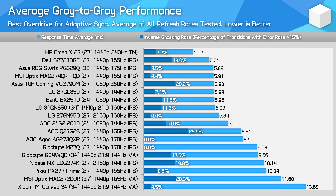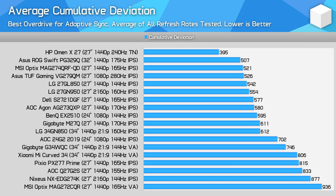The second chart is average grey-to-grey performance — a look at response times and overshoot on average across the refresh range, tested with the best single overdrive mode for variable refresh rate gaming. This is a key metric for those playing on a PC with either FreeSync or G-Sync enabled as the refresh rate can vary. An interesting result is that there is a glut of six monitors that performed within a 0.2ms range. Next up is average cumulative deviation, which tells us how close a monitor's response time gets to the ideal instant response, and will be a great tool to separate monitors that otherwise appear close on the charts.